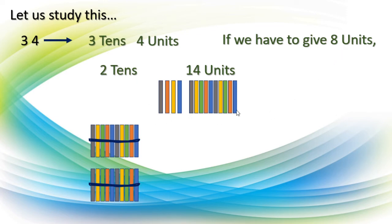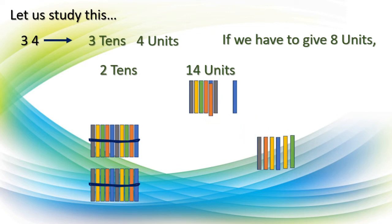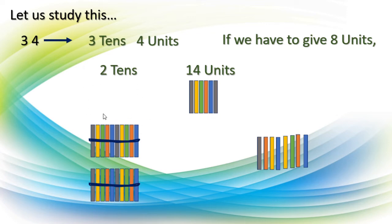Now it is very easy to give 8 sticks from these 14 sticks. Let us give him: 1, 2, 3, 4, 5, 6, 7, and 8. I have given 8 units. How did it become possible? Because we untied one ten — one bundle — and it became very easy to give that child 8 units.